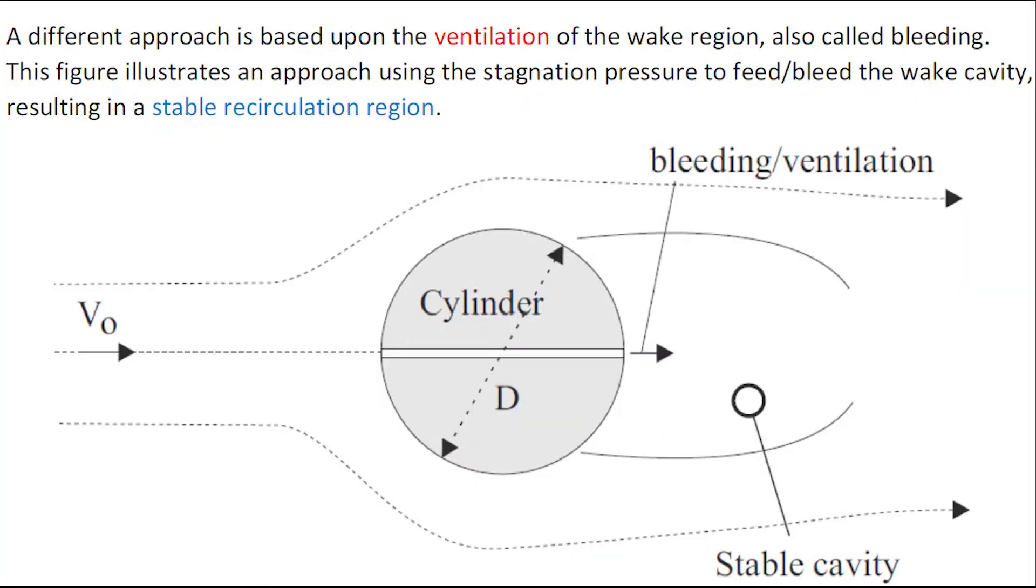A different approach is based upon the ventilation of the wake region, also called bleeding. With this figure, the stagnation pressure feeds the wake cavity, resulting in a stable recirculation region.